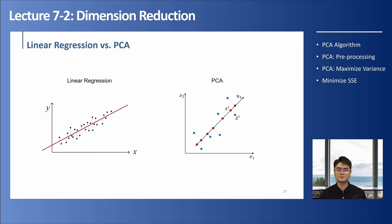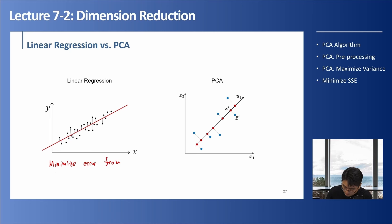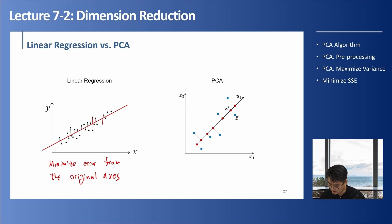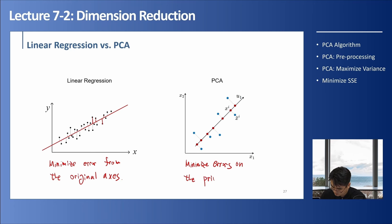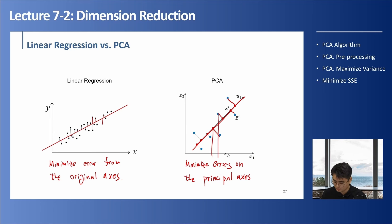PCA is something similar to linear regression, but they are slightly different. In linear regression, we are minimizing error from the original axis - the errors are calculated vertically. However, in PCA, we are also minimizing errors, but now on the principal axis. The errors are calculated perpendicular to the principal axis, not in the original vertical form. That is the main difference between linear regression and PCA.